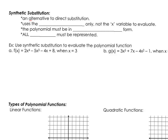Synthetic substitution is an alternative to direct substitution, and we'll use it later in this chapter. It uses all of the coefficients of your polynomial — not the x variables — to evaluate. The polynomial must be in standard form for this to work, and unlike direct substitution, you have to have all terms represented. If a term is missing, you plug in 0 as a placeholder.